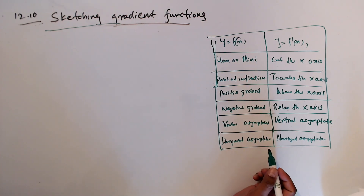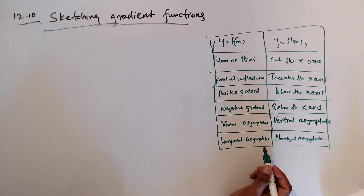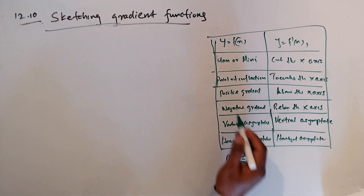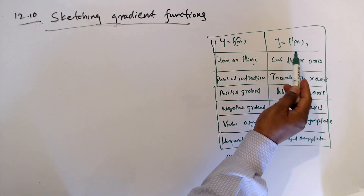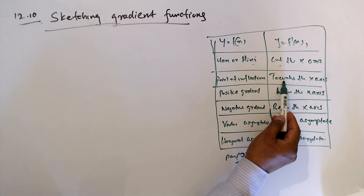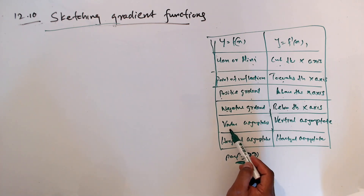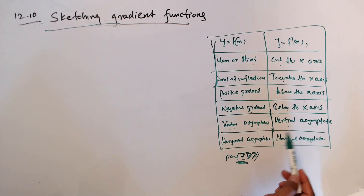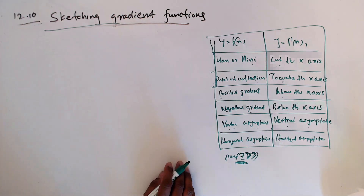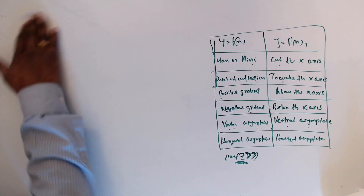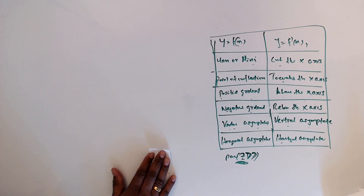This is a chart from the textbook, page 277. The key rules are: maximum or minimum points on the curve cut the x-axis on the gradient graph; a point of inflection touches the x-axis on the gradient graph; positive gradient is above the x-axis; negative gradient is below the x-axis. Vertical asymptotes correspond to vertical asymptotes, and horizontal asymptotes correspond to horizontal asymptotes on the gradient graph.